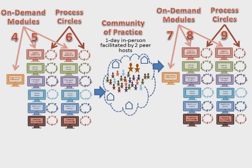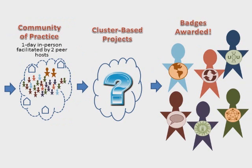There will be three more modules — seven, which is again a common module, as well as eight and nine. The third community of practice also includes some sort of project that your cluster will work on together. There are a lot of possibilities for this — there's no specific project you need to do, but we hope you will look at the needs in your community and how you might work together to help strengthen Unitarian Universalism in your area.